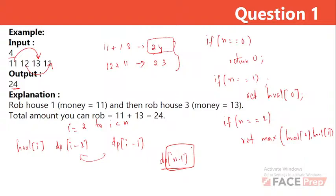To summarize the logic: I declare the DP array, store the first element directly, store the maximum of the first and second in dp[1], and then from the third element onward, find the maximum of the current house plus dp[i-2] versus dp[i-1]. I do not include the adjacent house (i-1 combined with i) because that would represent adjacent houses being robbed.